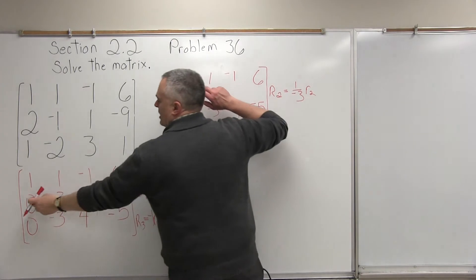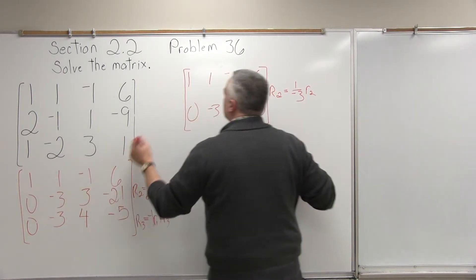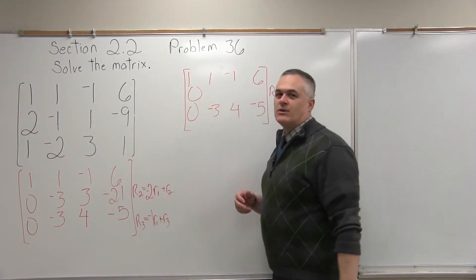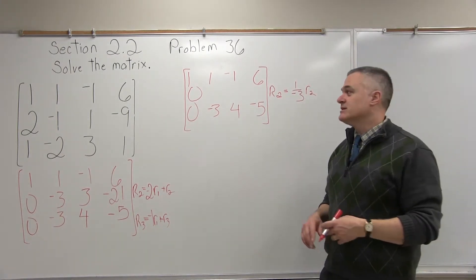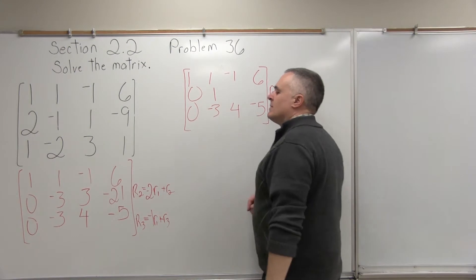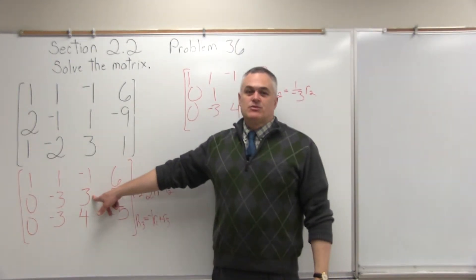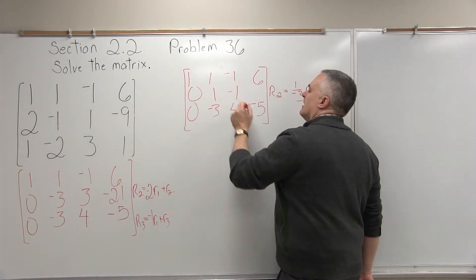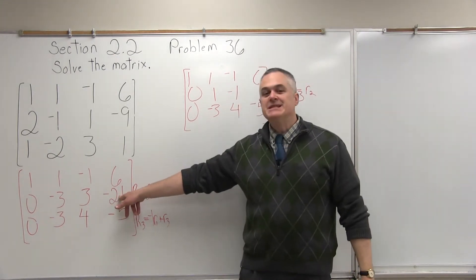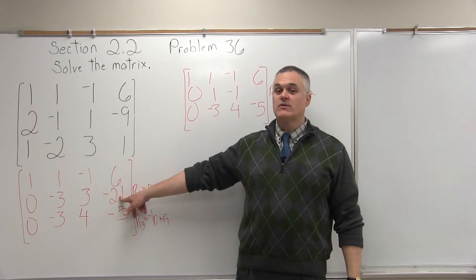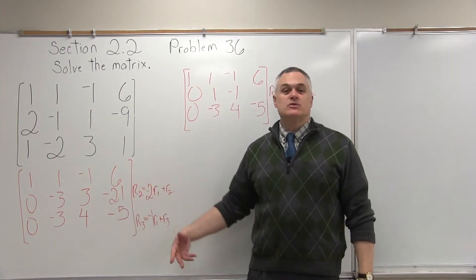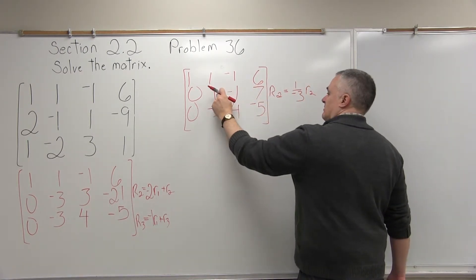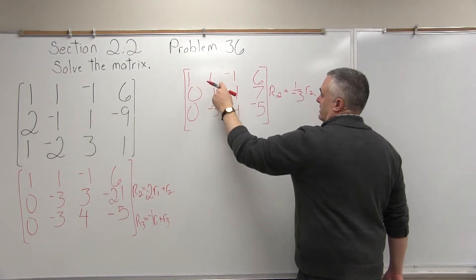1 over negative 3 times 0 stays 0. Next: 1 over negative 3 times negative 3 gives negative 3 over negative 3 — negatives cancel, 3s cancel — equals 1. Next: 1 over negative 3 times 3 — 3s cancel but keep the negative — gives negative 1. Last position: 1 over negative 3 times negative 21 gives negative 21 over negative 3; negatives cancel and 21 over 3 reduces to positive 7. Step 3 is complete — I have a 1 in row 2, column 2.